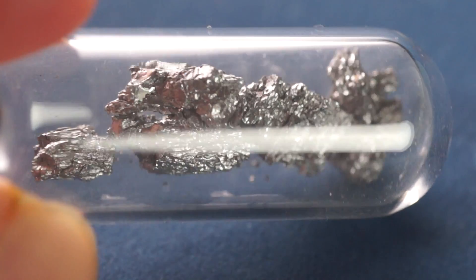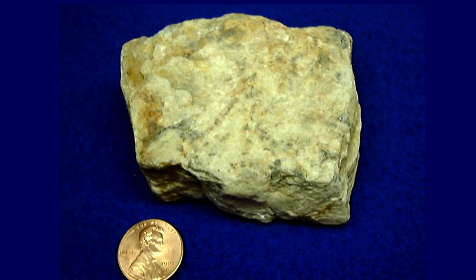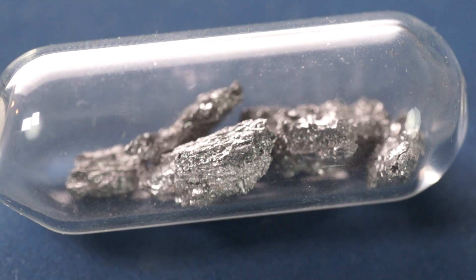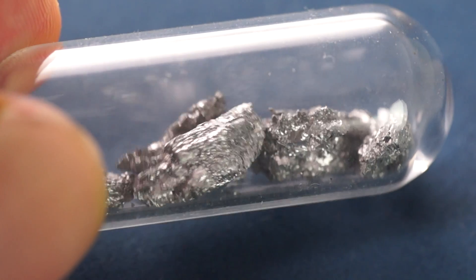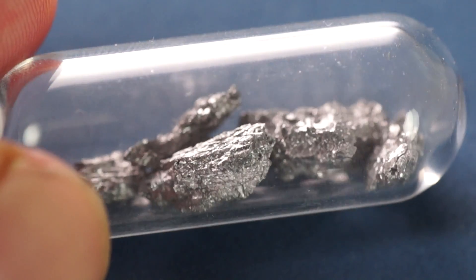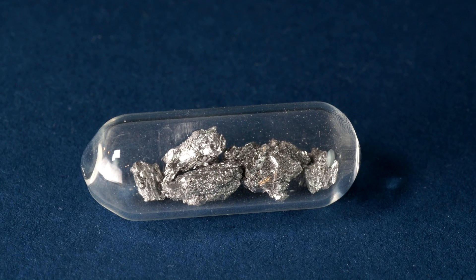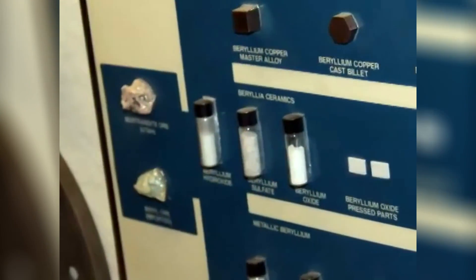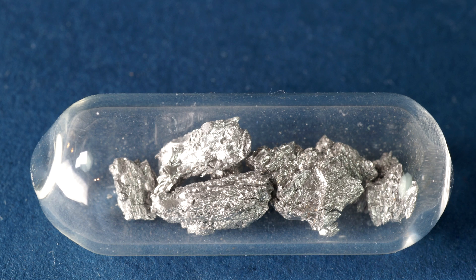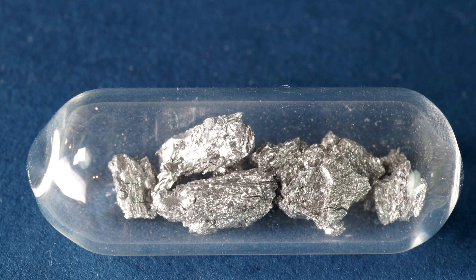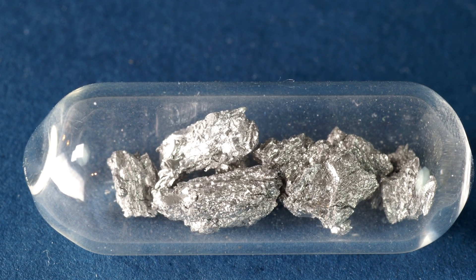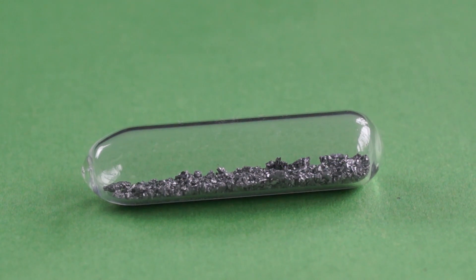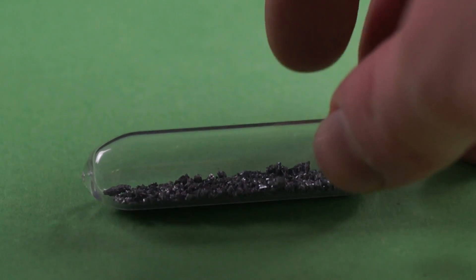Beryllium is a very rare element and has a fairly high price — a gram of beryllium costs about $50. The metal is obtained by recovering beryllium fluoride with magnesium. Externally, beryllium looks like a shiny gray metal with a distinct crystalline structure.